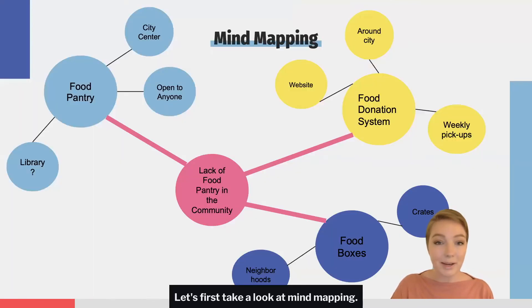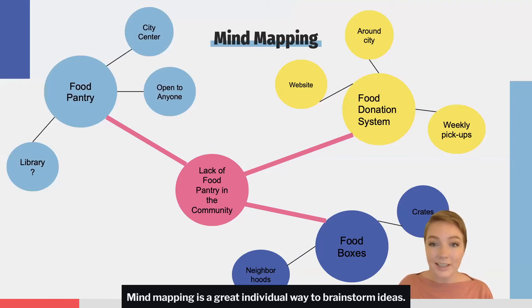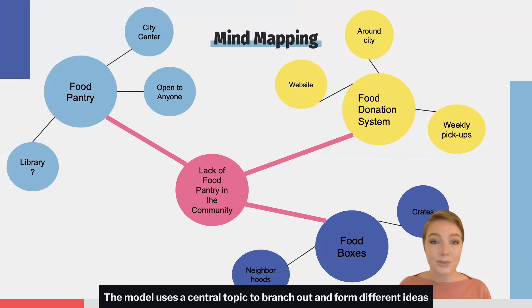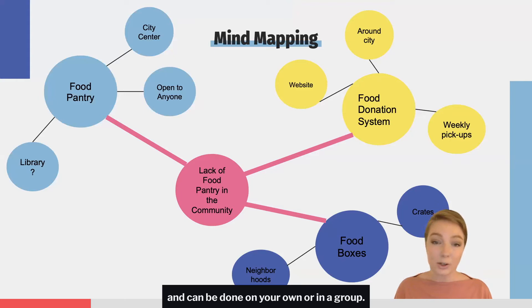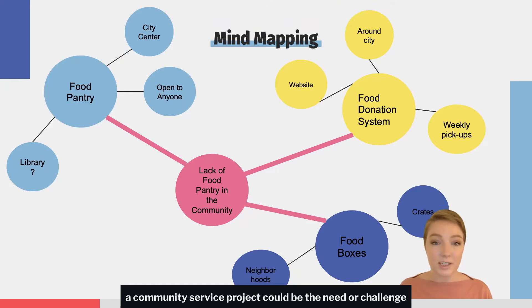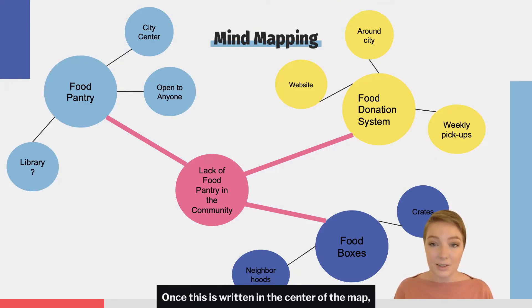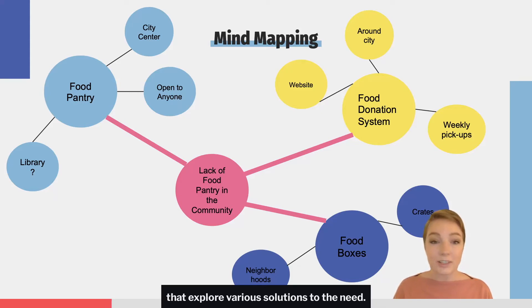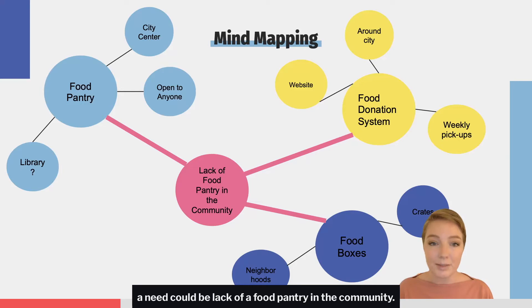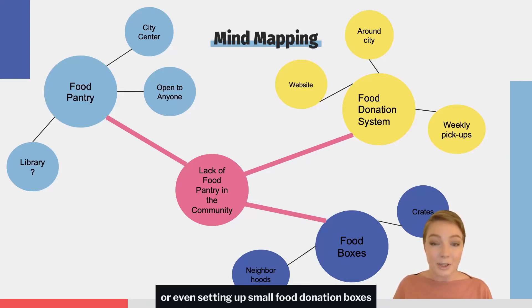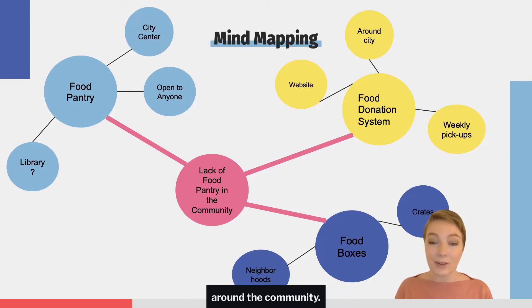Let's first take a look at mind mapping. Mind mapping is a great and visual way to brainstorm ideas. The model uses a central topic to branch out and form different ideas, and can be done on your own or in a group. For example, the central topic for brainstorming a community service project could be the need or challenge that is being solved. Once this is written in the center of the map, you can begin to create branches that explore various solutions to the need. For example, a need could be lack of a food pantry in the community. Branches for this could include creating a food pantry, building a food donation system, or even setting up small food donation boxes around the community.